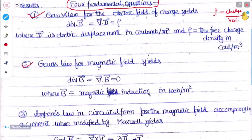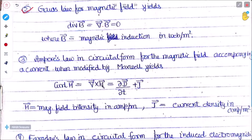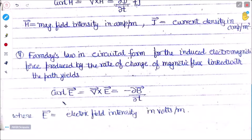The divergence of B equals zero, where B is the magnetic induction in Weber per meter squared. The third is Ampere's law in circuital form: curl of H equals ∂D/∂t plus J, where D is the displacement vector, H is the magnetic field intensity, and J is the current density. The fourth is Faraday's law: curl of E equals minus ∂B/∂t.